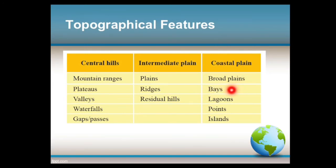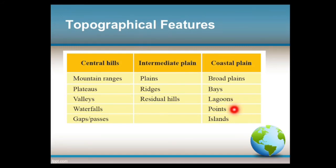Examples for residual hills include Mihinthalaya and Sigiriya Rock. For the coastal plain: bays — examples include Koddiyar Bay and Arugam Bay. Lagoons — examples include Negombo, Jaffna, Puttalam, and Chilaw. Points — examples include Dondra Head.